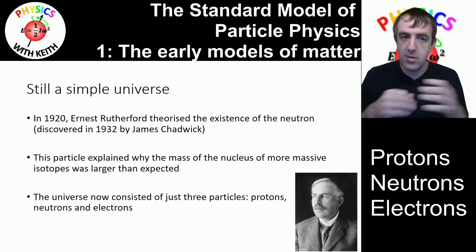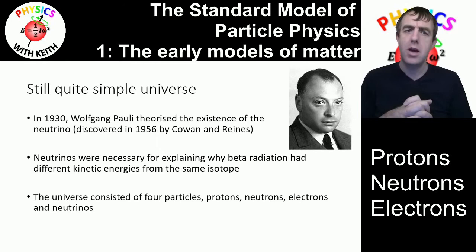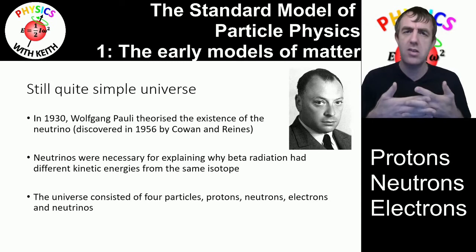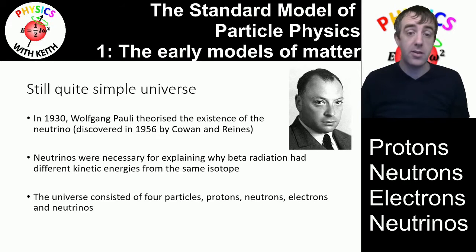The picture still wasn't complete, though. There were some strange things observed: electrons could come from the nucleus of the atom, and when they were emitted they had a range of kinetic energies with no real explanation. So Wolfgang Pauli theorised that another particle was emitted in beta radiation — one with no charge and very little mass, if any — called the neutrino. Neutrinos were later discovered, so now the universe consisted of four particles, still much less than the 92 that Mendeleev gave us.